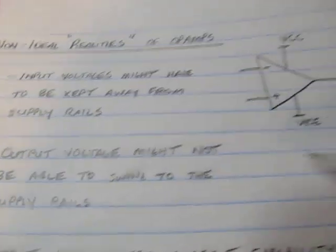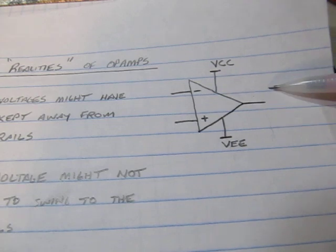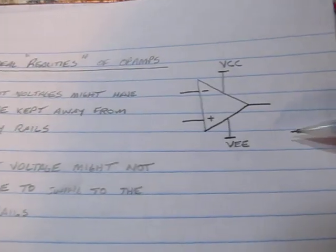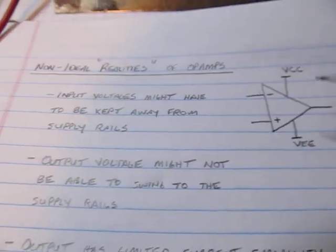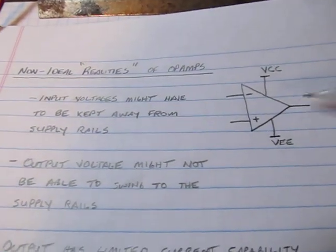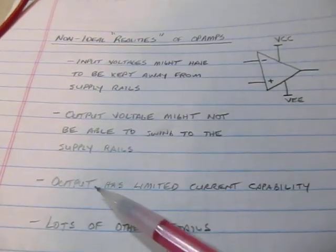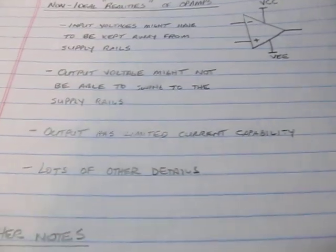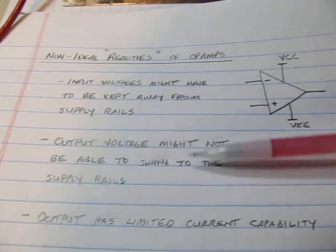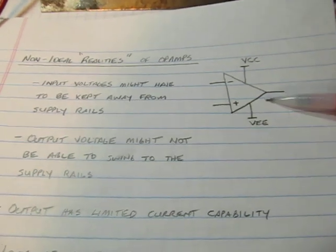Also the output voltage might not be able to swing all the way to the supply rails. You might be able to swing all the way to ground or the negative supply and only within a volt or two of the positive supply, or vice versa. Some op-amps allow you to get very close to both rails. Again, you're going to have to consult the datasheet for the specific op-amp that you're using to know how close the output can swing to the supply rails and how close the inputs can be brought to within the supply rails. Also the output has typically limited current capability and there's lots of other details. But these are two of the most important considerations in terms of the realities of op-amps that you would have to consider when you're picking one to use in your circuit.